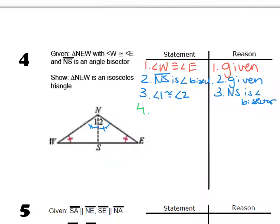I'm trying to prove that triangle NEW is an isosceles triangle. So first, I'm going to prove that these two triangles on the sides are congruent. Then I'm going to prove that my sides are congruent and then use the definition of an isosceles triangle.